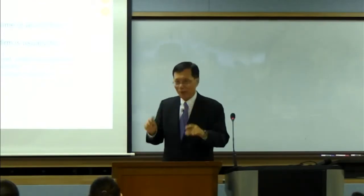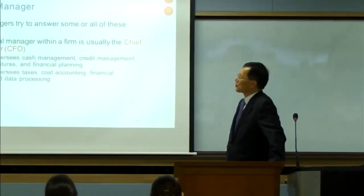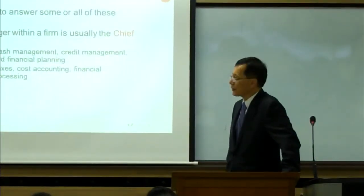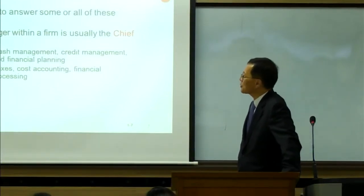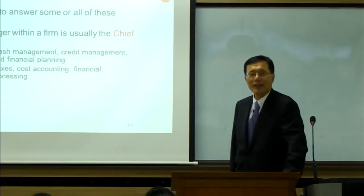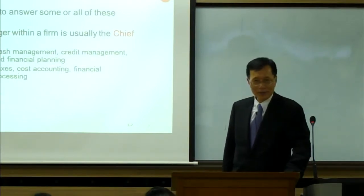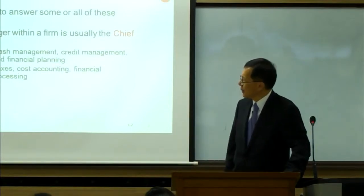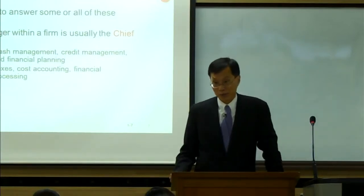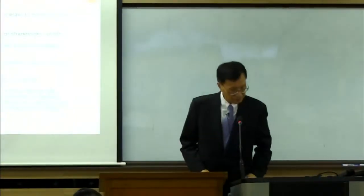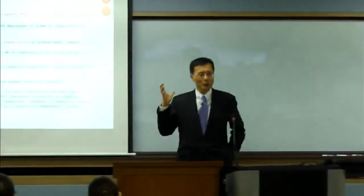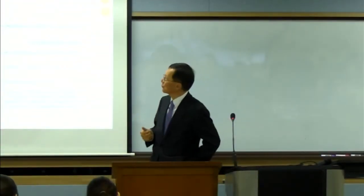The top financial manager is usually the CFO. The treasurer oversees cash management, credit management, capital expenditures, and financial planning. The controller oversees taxes, cost accounting, financial accounting, and data processing — including big data management, which is increasingly fundamental in corporate management.